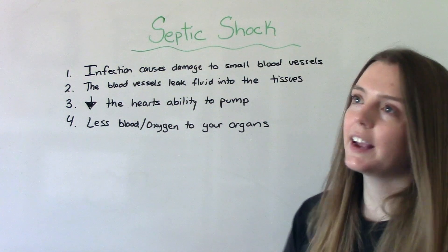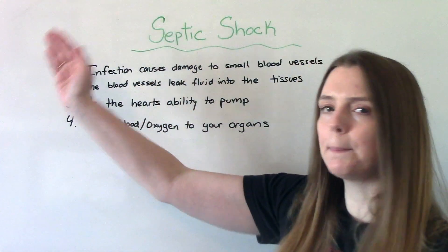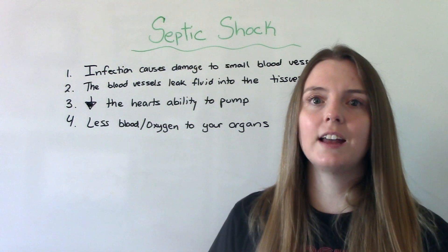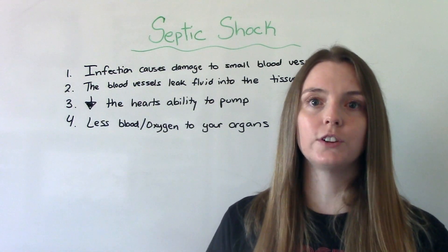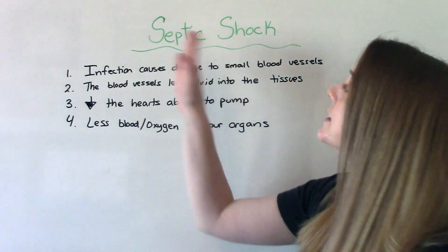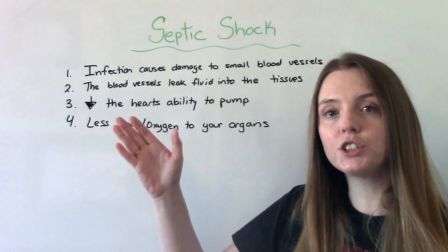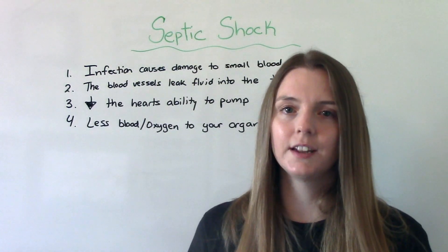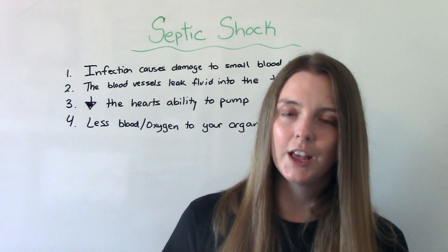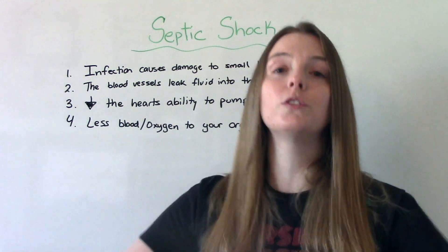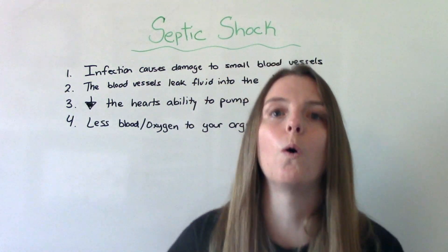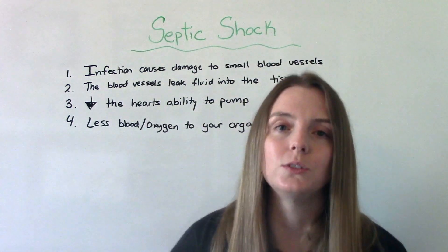The first thing we want to do is break down those two words: septic and shock. Shock occurs in the body when there is not enough oxygen being delivered to our organs — there's poor perfusion occurring. Septic shock is a type of shock caused by an infection, nine times out of ten a bacterial infection. Sepsis is the body overreacting to an infection that has become systemic, meaning the whole body is reacting to it.